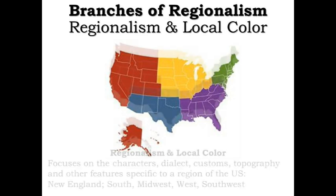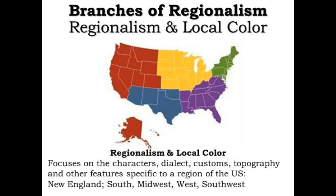The next branch of realism contains two terms: regionalism and local color. When we talk about regionalism, local color is used within fiction and poetry, and it focuses on characters, dialects, customs, the topography of the land, and other features specific to a given region. In the United States, we have five different regions: the Northeast, the South, the Midwest, the Southwest, and the West.